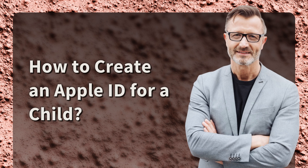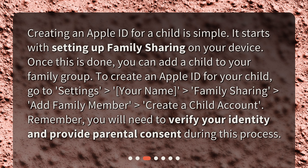How to create an Apple ID for a child? Creating an Apple ID for a child is simple. It starts with setting up Family Sharing on your device. Once this is done, you can add a child to your family group. To create an Apple ID for your child, go to Settings > Your Name > Family Sharing > Add Family Member > Create a Child Account. Remember, you will need to verify your identity and provide parental consent during this process.